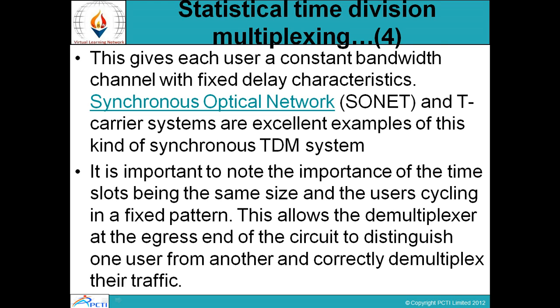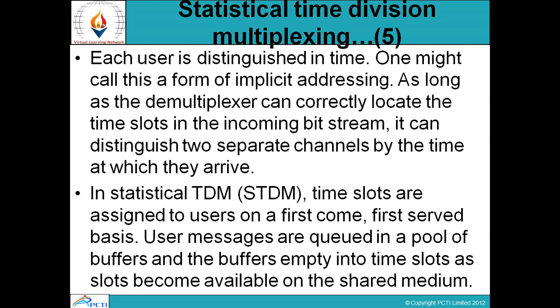It is important to note the importance of the time slots being the same size and users cycling in a fixed pattern. This allows the demultiplexer at the egress end of the circuit to distinguish one user from another and concurrently demultiplex their traffic. Each user is distinguished in time — one might call this a form of implicit addressing. We can easily identify different users with respect to time.